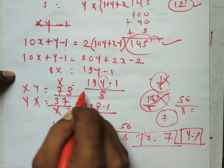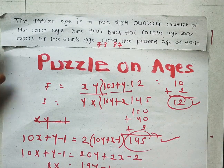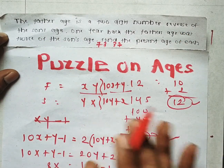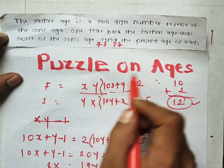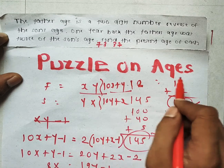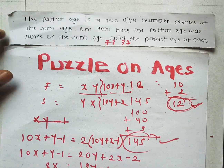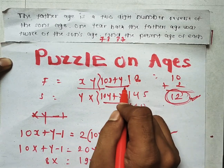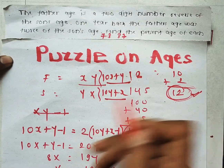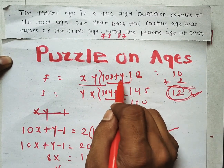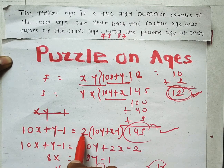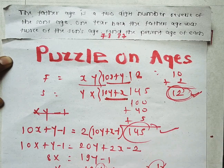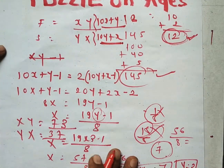To quickly recap: the father's age is a two-digit number, so F equals XY. The son's age is the reverse, YX. A two-digit number XY equals 10x plus y, and YX equals 10y plus x. One year back, the father's age was 10x plus y minus 1, and this equals twice the son's age one year back, which is 10y plus x minus 1.